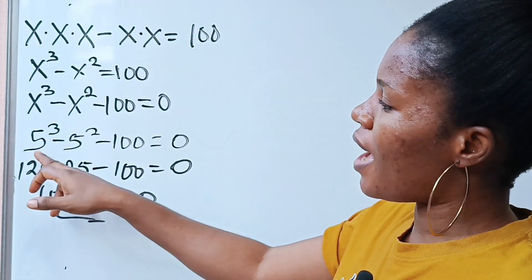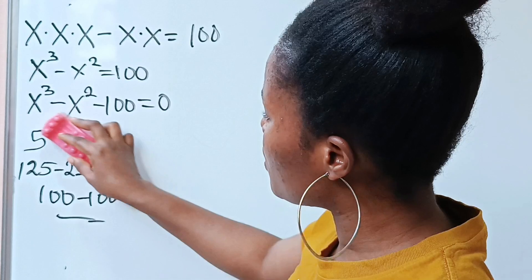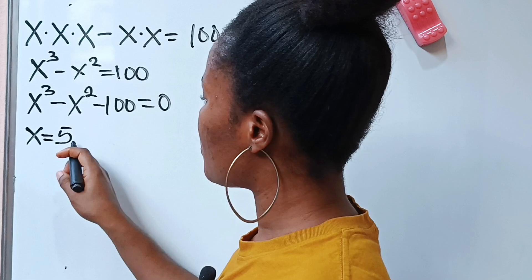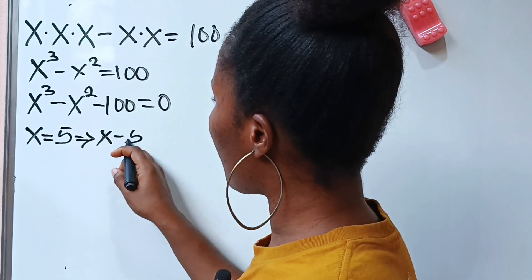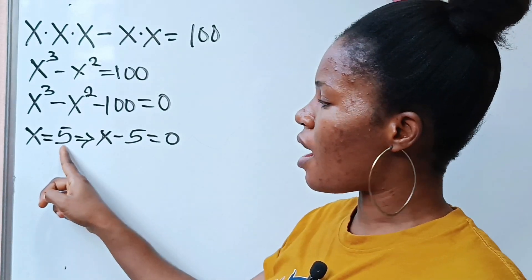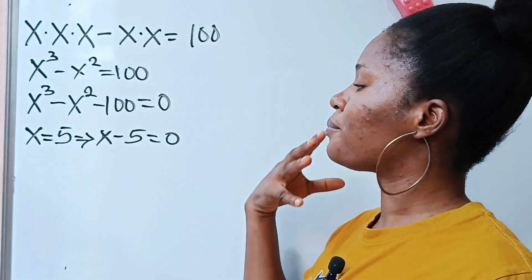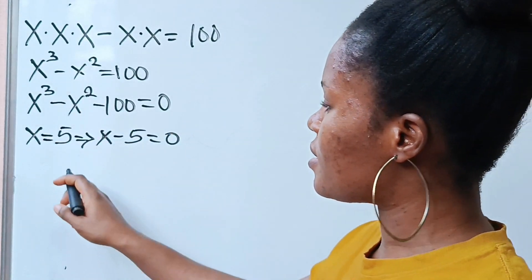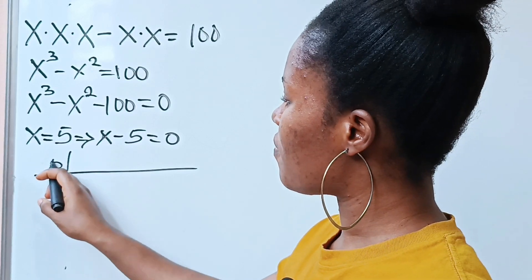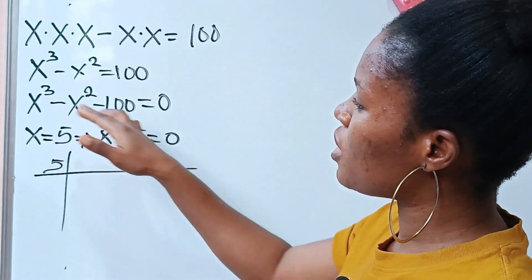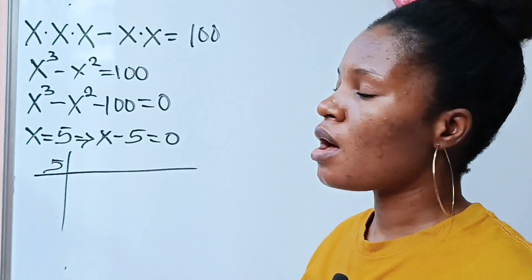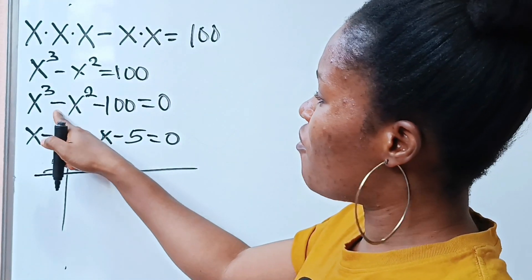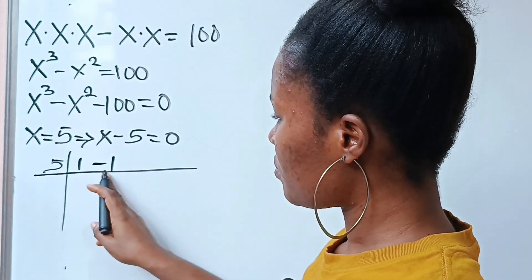So we write that x is equal to 5, and this implies that x minus 5 is equal to 0. This becomes our root and this becomes our factor. We are going to use this to synthetically divide whatever we have here. We write 5 here and write the coefficients: we have 1 for x to the power of 3, so we write 1, then we have minus 1 here, so we write minus 1.